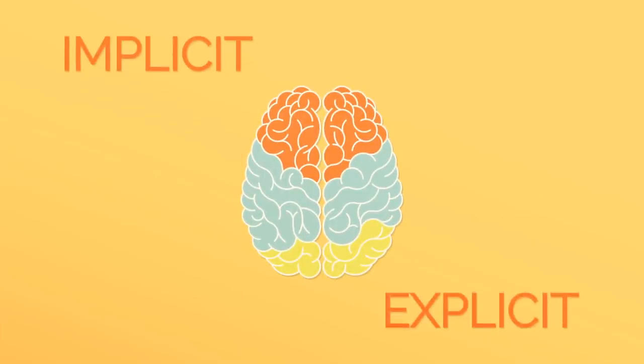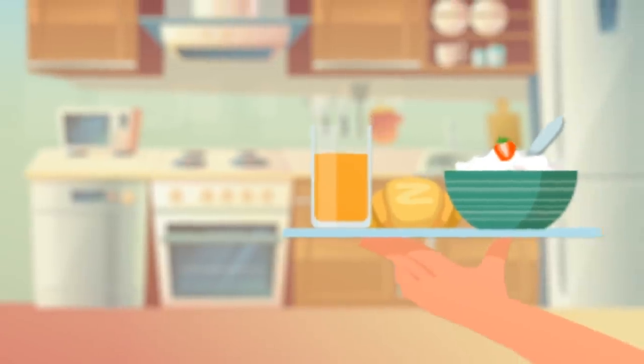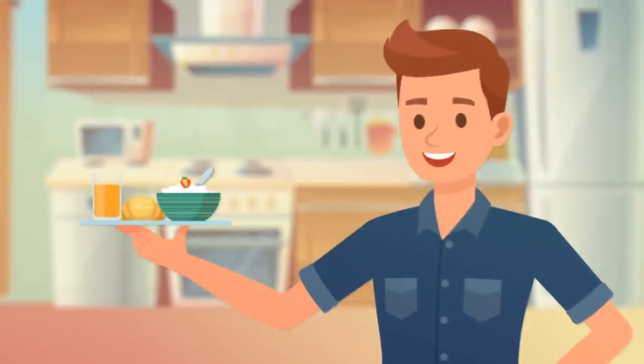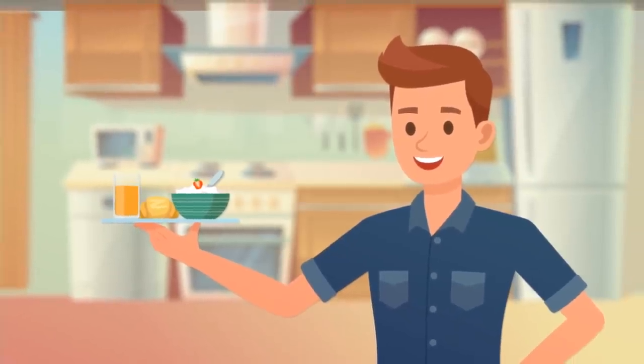Your memories are separated into two different categories: implicit and explicit. Implicit memories are things you remember unconsciously. You don't recall brushing your teeth or eating breakfast most mornings because you do these activities without thinking.